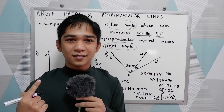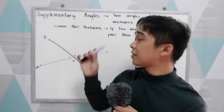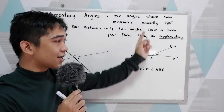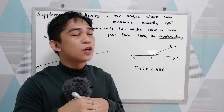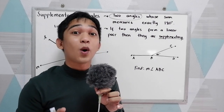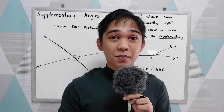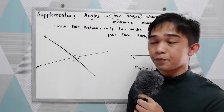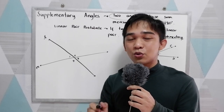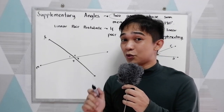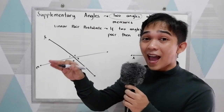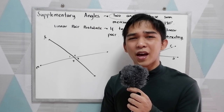Now let us discuss supplementary angles. Supplementary angles are two angles whose sum measures exactly 180 degrees. If we get the sum of those two angles, the sum must be 180 degrees. Under supplementary angles, you will encounter the linear pair postulate: if two angles form a linear pair, then they are supplementary. Therefore, if the sum of two angles is 180, they are a linear pair. Or, if two angles lie on a straight line, their sum is 180 degrees.